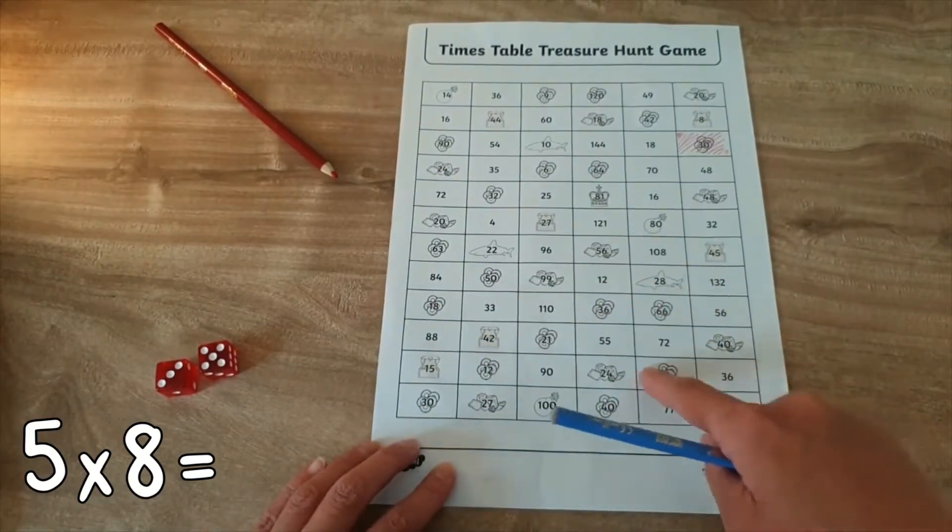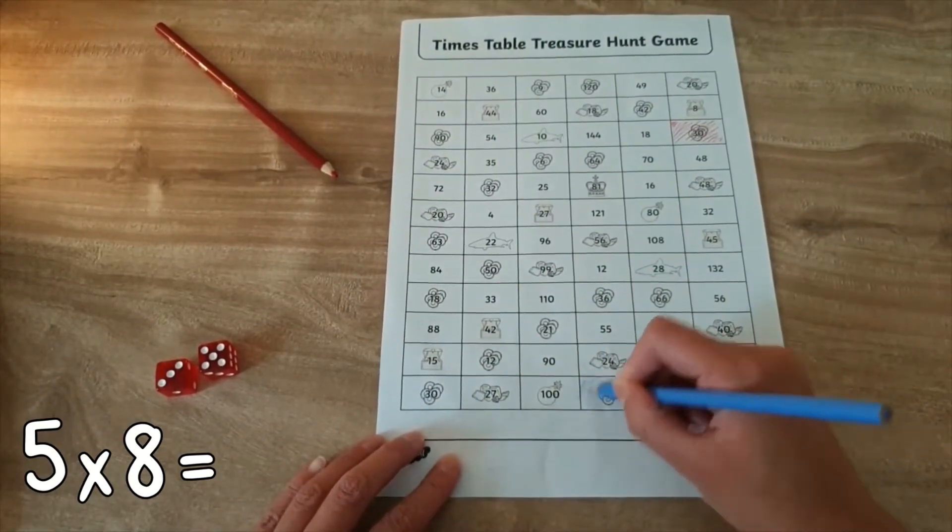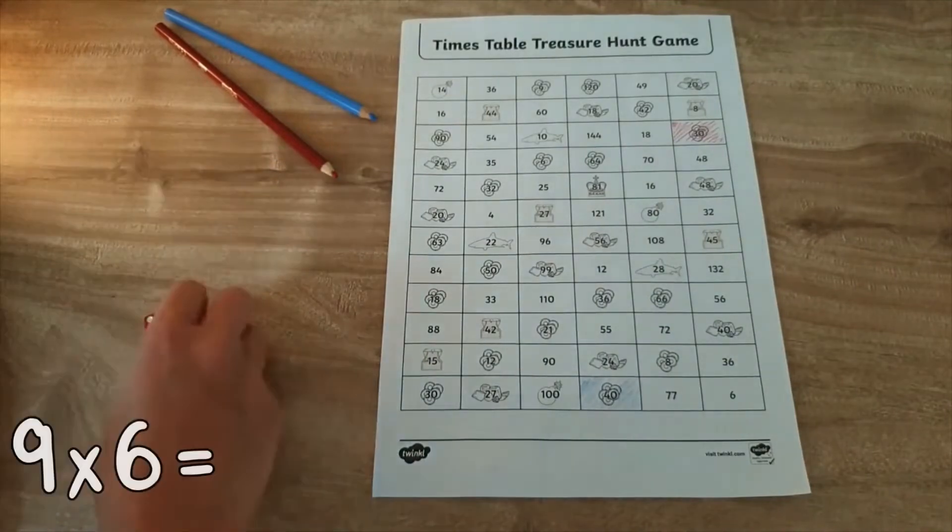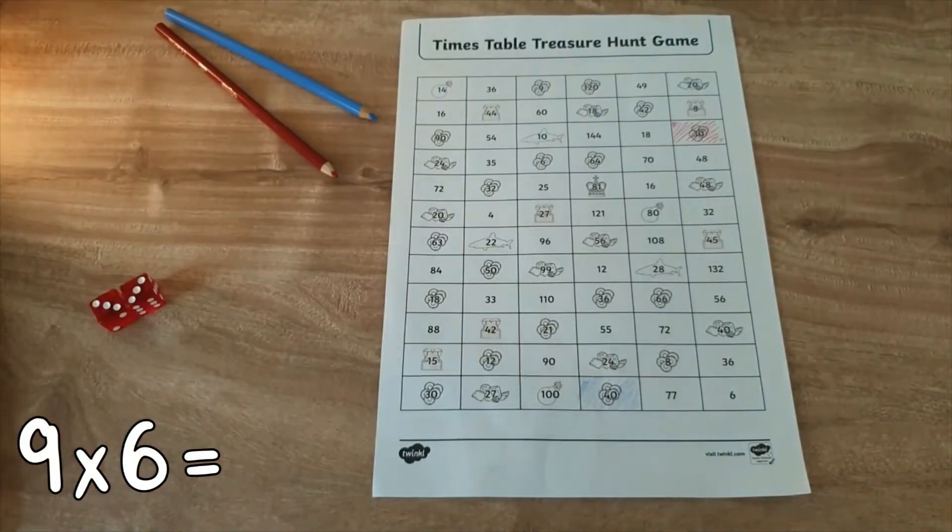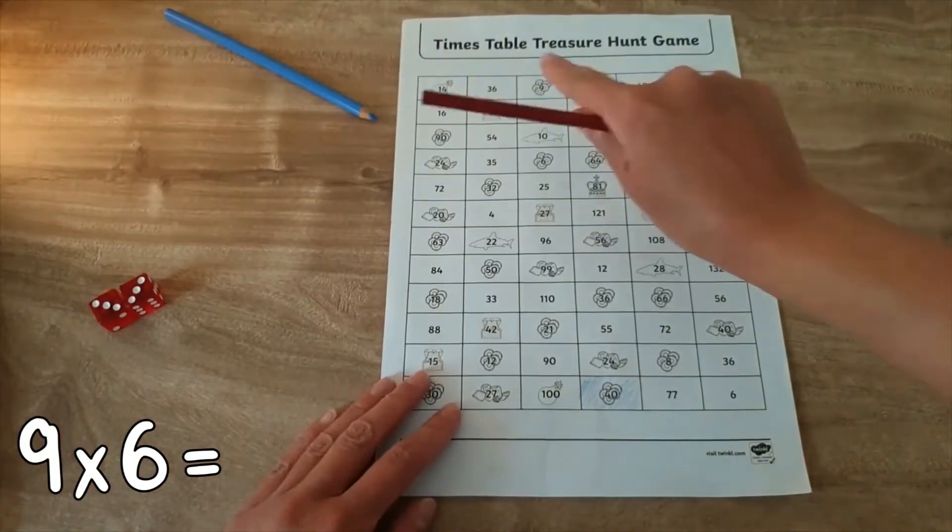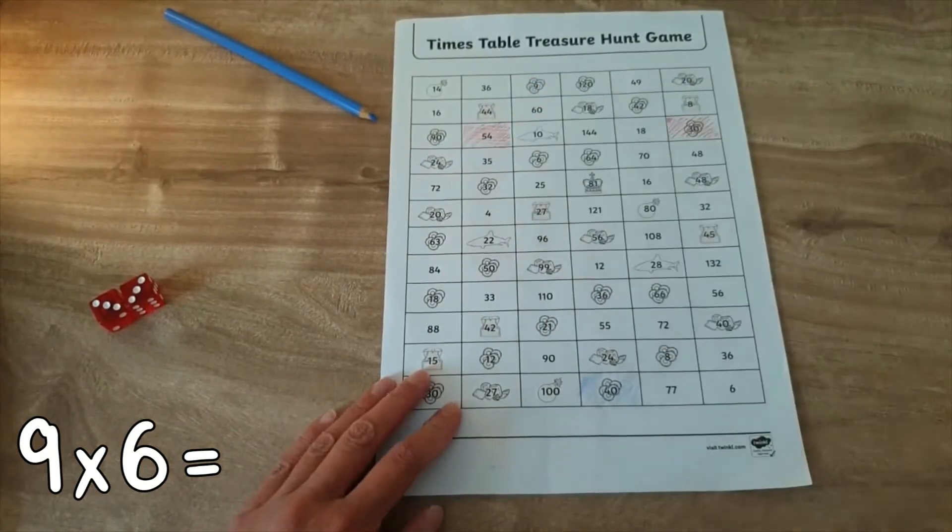Children then use the game board to find and color in the answer. Players will take turns coloring the squares until a stick of dynamite or a player has colored in four squares in a row horizontally, vertically, or diagonally.